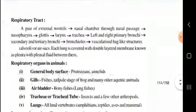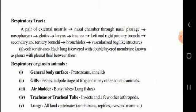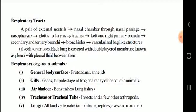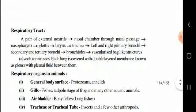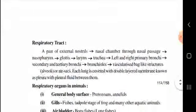The respiratory tract pathway is: external nostrils → nasal chamber → nasopharynx → larynx → trachea → left and right primary bronchi → secondary and tertiary bronchi → bronchioles → alveoli (vascularized bag-like structures). From there, diffusion occurs and CO2 is expelled out of the lungs.